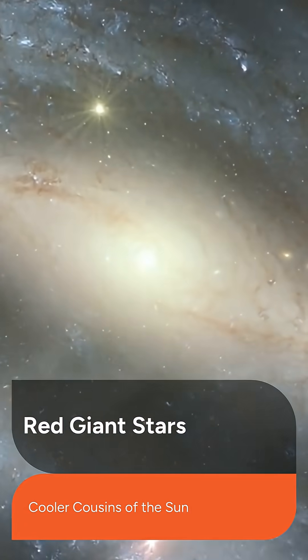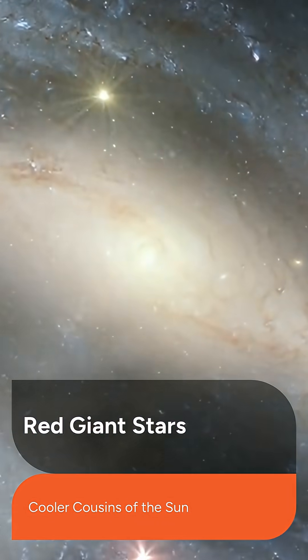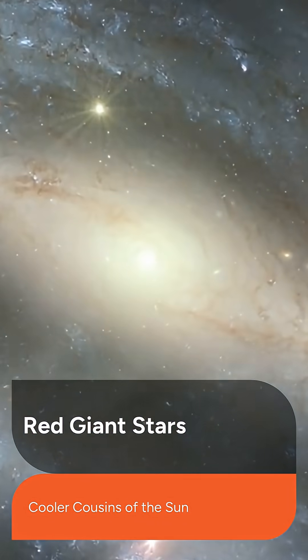Red giant stars are the older, cooler cousins of our Sun. As they age, they lose massive amounts of material through stellar winds.